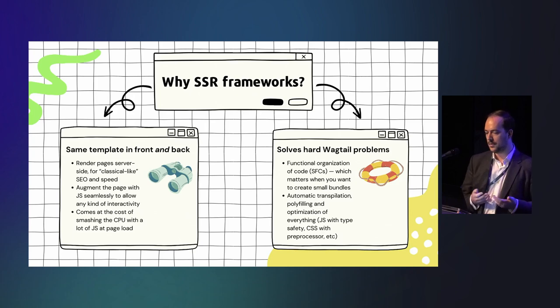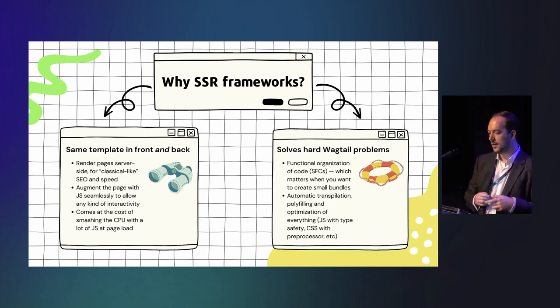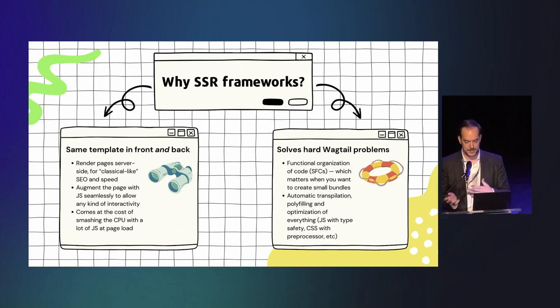Why SSR framework, like Nuxt in our case, because it's the same template in the front-end and the back-end, so you get classical type SEO and performance, because the content is already generated, as opposed to SPA, where you need to download the JavaScript and then generate the content. You can have any kind of interactivity you want, so if the customer goes, can we turn this into a Facebook-like comment section, where you can like the things and so on, it's very annoying to be doing the template in jQuery and mimic the template from the Django.